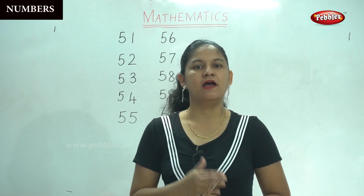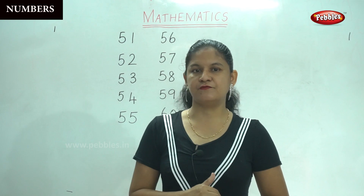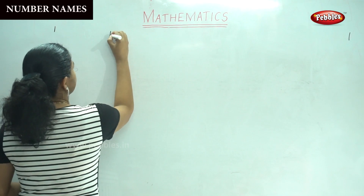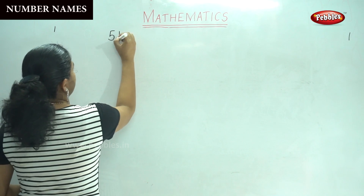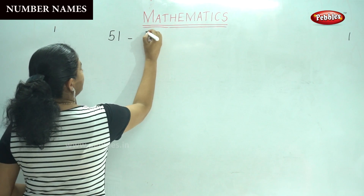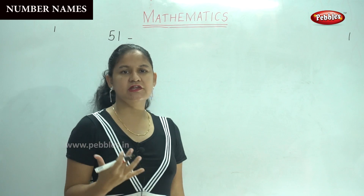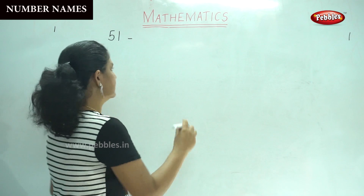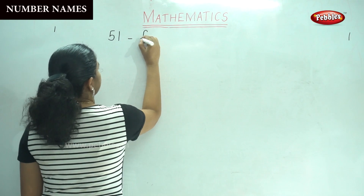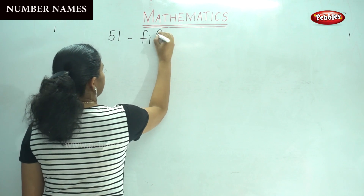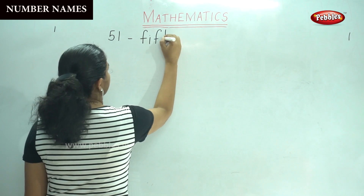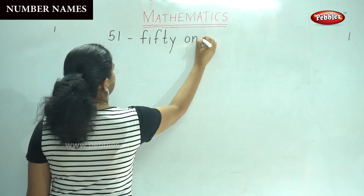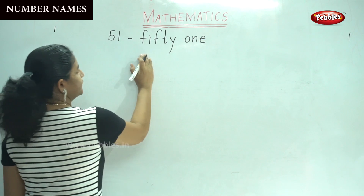So next we are going in for number names from 51 to 60. 5 and 1 — you will write 51. We already know the spelling of 50, so we just have to add on the 1 to it. F-I-F-T-Y — fifty. O-N-E — one. 51.